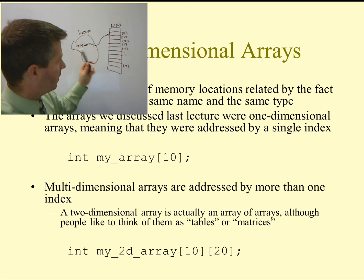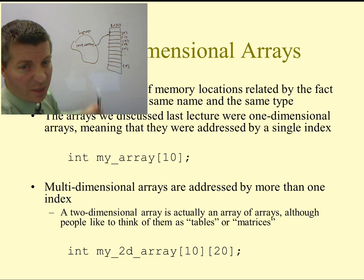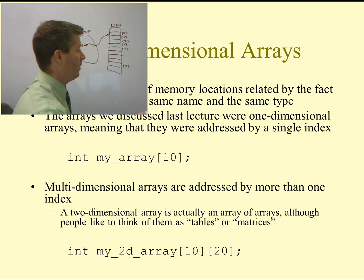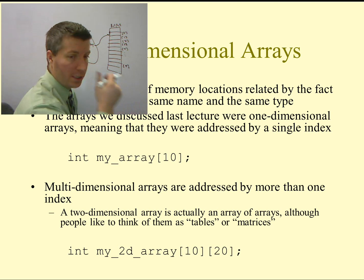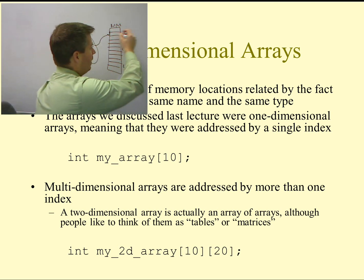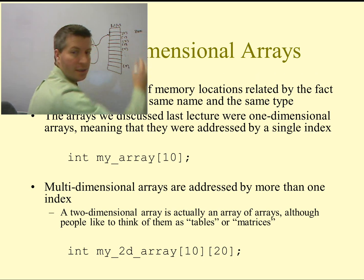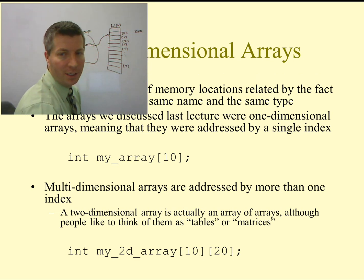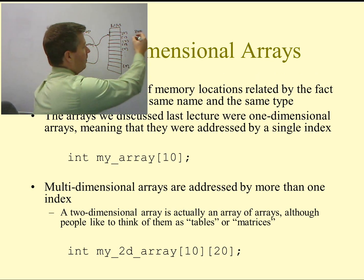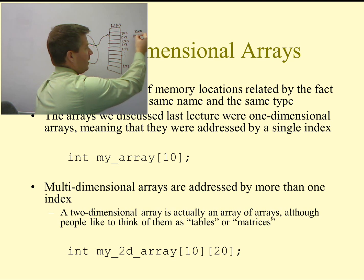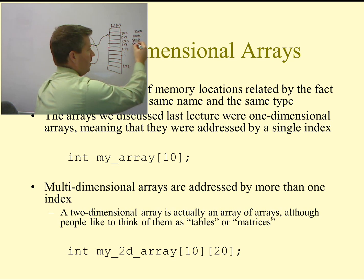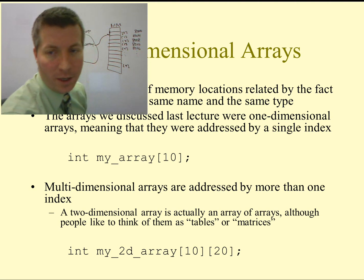If we assume that this is a 32-bit operating system, an integer would consist of 4 bytes. So if this first element was at index 8,000, the second one would be at index 8,004, the next one at 8,008, then 8,012, 8,016, and so on.